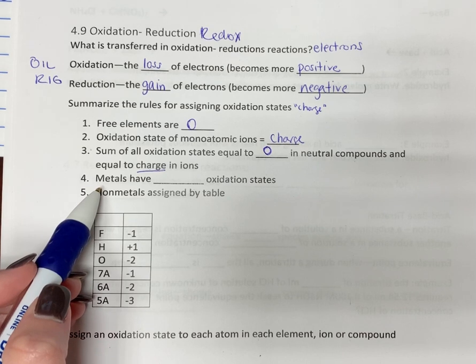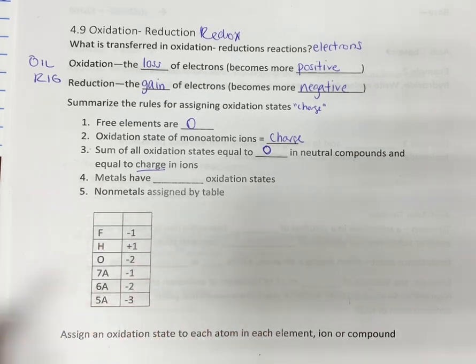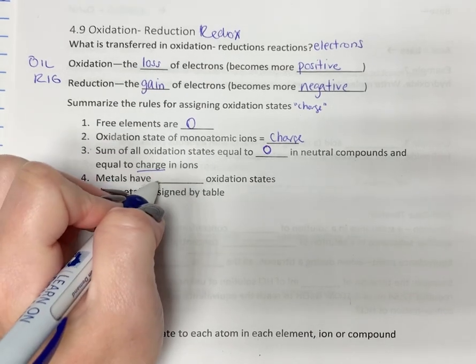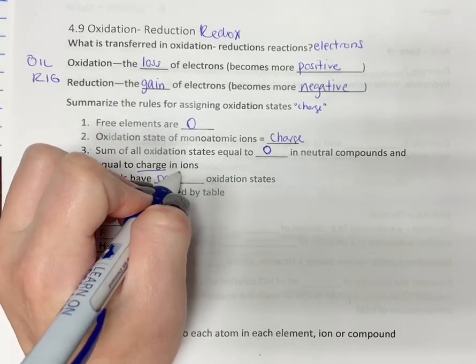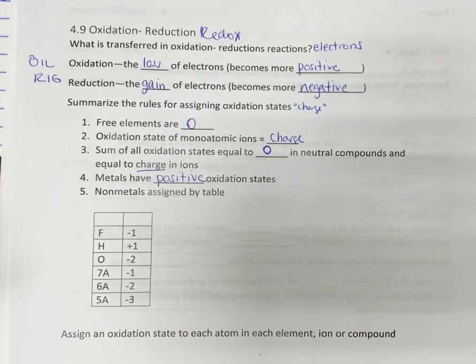Metals, remember where metals are on the periodic table. They're everything to the left of the stairs. Metals always have positive oxidation states, because remember, metals always lose electrons.